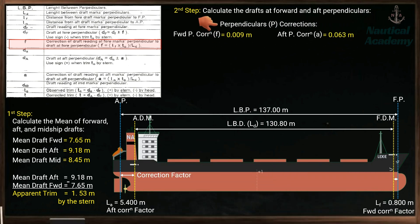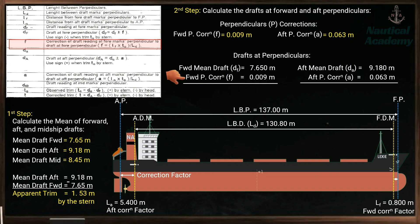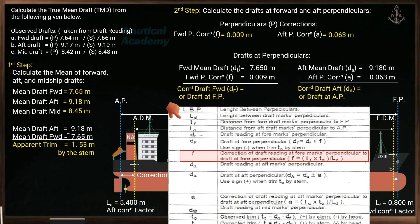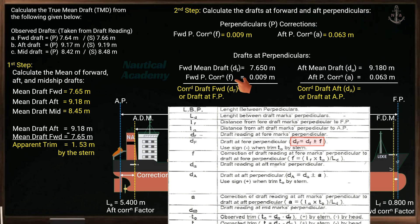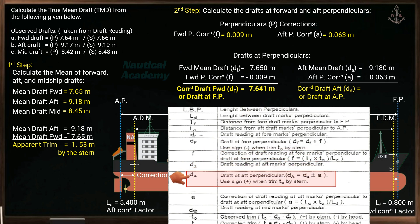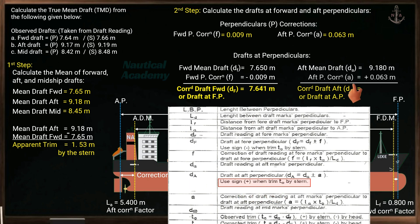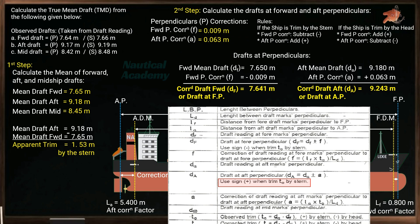Since the perpendicular corrections have been calculated, the next step is to apply these corrections to determine the drafts at perpendiculars. For the forward draft, the rule is to subtract the correction when the observed trim is by the stern — the draft at forward perpendicular is 7.641 meters. For the aft draft, the rule is to add the correction when the observed trim is by the stern — the draft at aft perpendicular is 9.243 meters. These rules apply since the ship is trimmed by the stern.